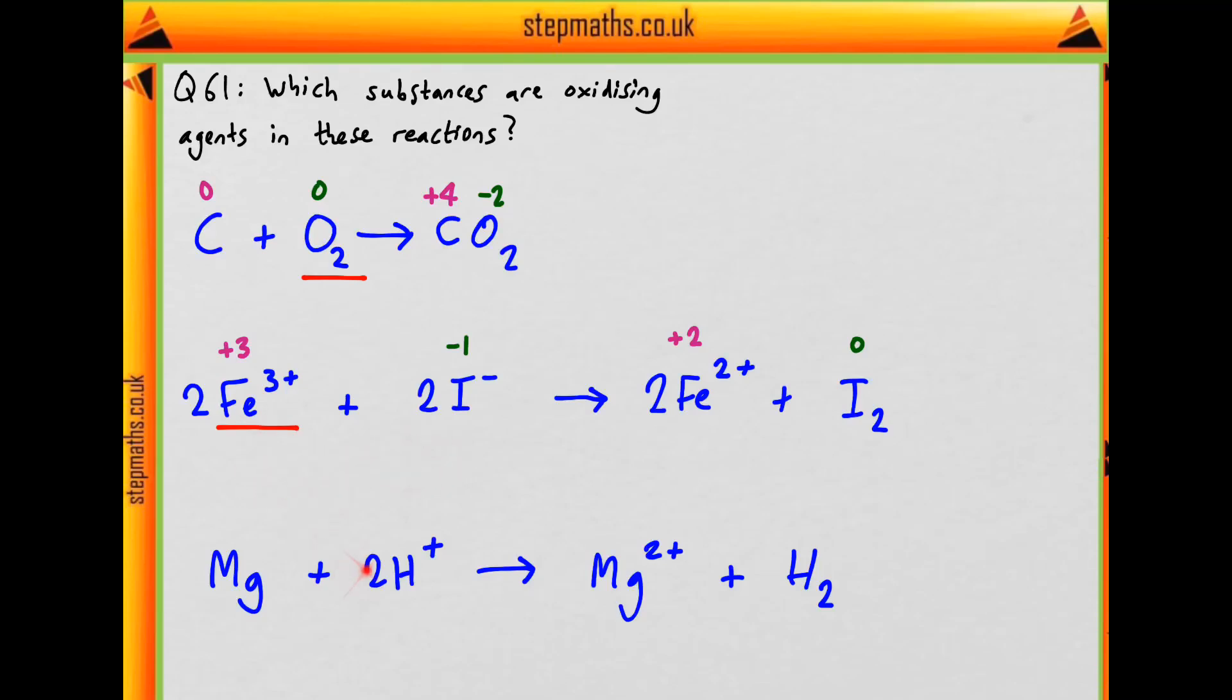Finally, what are the oxidation states here? Elemental magnesium must be 0. The hydrogen ion is 1+. Since it has a 1+ charge, it'll form magnesium 2+. And hydrogen in its elemental state is 0.